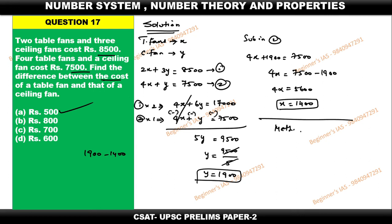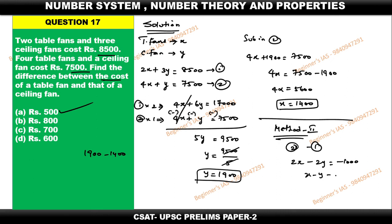Now Method 2 — directly finding the difference without elimination. Just do equation 2 minus equation 1: (4x - 2x) + (y - 3y) = 7500 - 8500. This gives 2x - 2y = -1000, therefore x - y = -500, which means y - x = 500. The difference is 500 rupees.